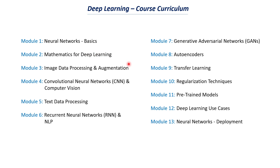Once the mathematics part has been completed, the third module will be on processing image datasets. There we will be discussing about how to process image datasets and also about image augmentation. And once that has been done, module 4 will be completely on computer vision and convolutional neural networks.